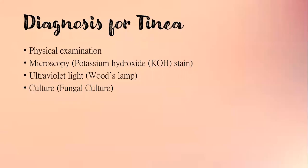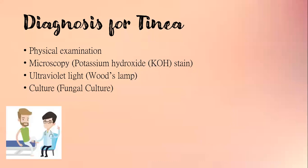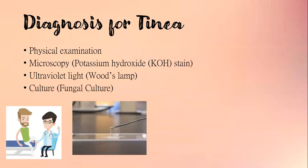For the diagnosis of tinea, physical examination is often sufficient — a thorough history and physical examination can diagnose tinea. The classic lesion is an erythematous raised scaly ring with central clearing. Multiple lesions may be present. The severity can range from mild scaly lesions to erythematous exudative lesions characteristic of superimposed bacterial infections. Next is microscopy or the potassium hydroxide (KOH) stain, a commonly used method that is inexpensive, easy to perform, and has high sensitivity. Scrapings from lesions are examined under a microscope for the presence of fungal hyphae.